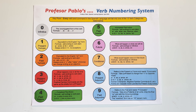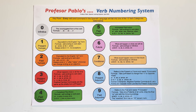Number two is the past participle. They end in -ado or -ido (A-D-O or I-D-O), equivalent to the English -ED: studied, worked, purchased, transferred, painted. The past participle is used hand in hand with the auxiliary verb haber — the A, AS, A, EMOS, AN with a silent H. Example: it has rained — ha llovido. I have worked a lot this week — he trabajado mucho esta semana.